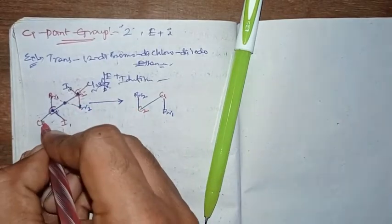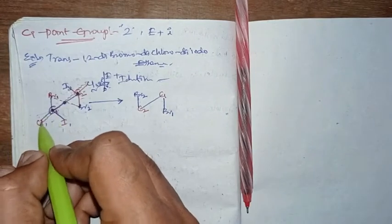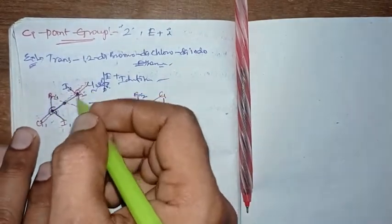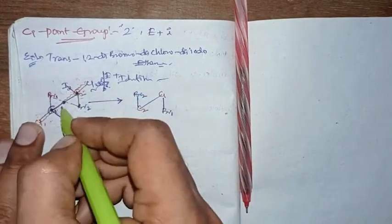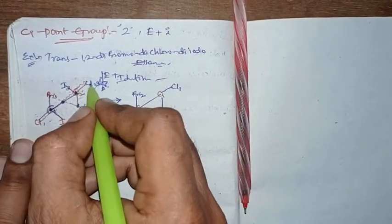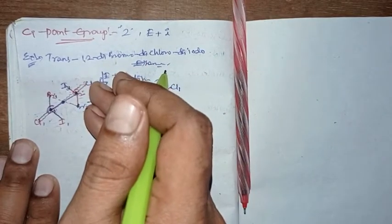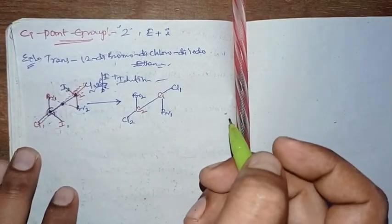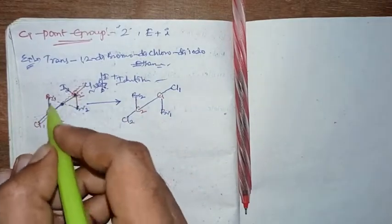Going with chlorines — chlorine 1 is on the front side, left. When it inverts its position, it will go to the back side and right side, reaching the chlorine 2 position. Similarly, chlorine 2, at the back side and right side, when inverted, reaches the front side and left — replacing chlorine 1. So chlorine 1 and chlorine 2 exchange positions. Same carbons are exchanging, same bromines are exchanging.